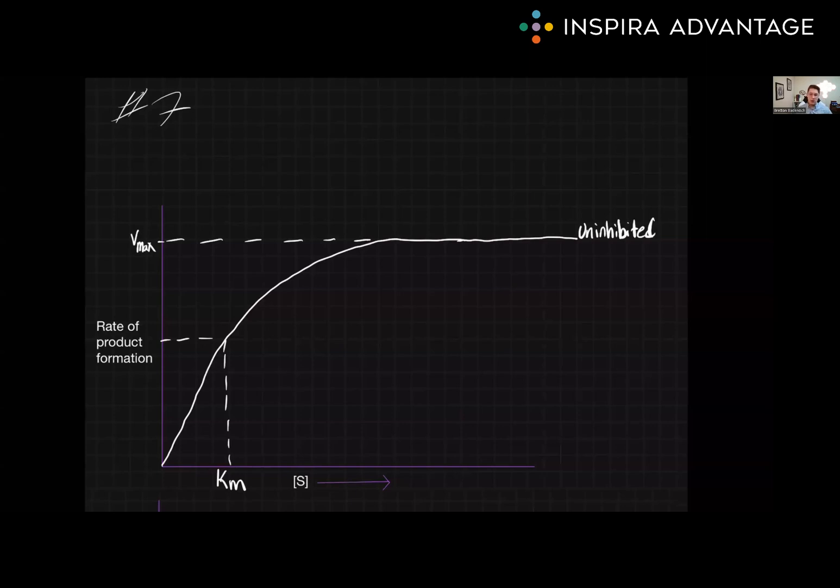Additionally, Vmax is related to the value I labeled as Km on the x-axis. Km is the amount of substrate required to reach one-half of Vmax. Km is a convenient way to measure enzyme affinity. As affinity increases, Km decreases. Keep these values in mind as we discuss each type of inhibition.